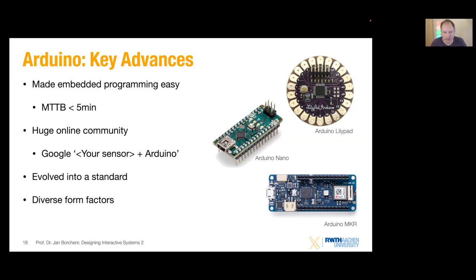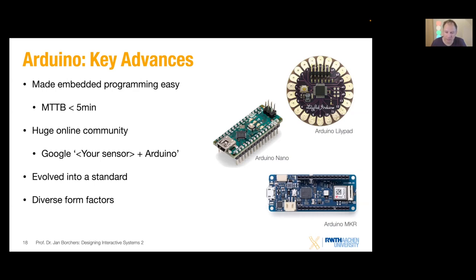You might ask about communication — where's the internet connectivity, the TCP/IP, the web browser? That's been added more recently. There have always been boards to add Wi-Fi connectivity to a standard Uno by stacking a so-called shield on top. But these days Bluetooth or Wi-Fi can be on the main board because components have gotten small enough. The Arduino MKR is an example of a board that has much more processing power than the original Arduinos plus Wi-Fi or Bluetooth on board.